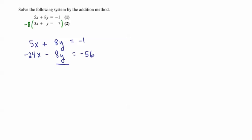Once we've done that, now you can see how the addition works and how one of the variables will be eliminated. So we have negative 24x plus 5x. You can use your calculator if you need to. That's going to give us negative 19x.